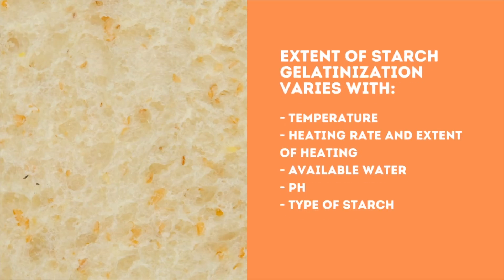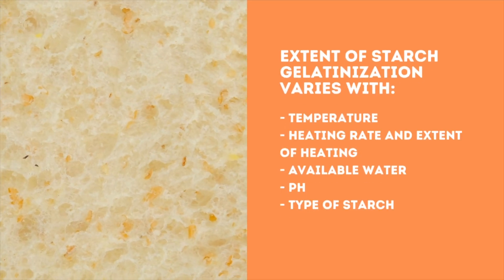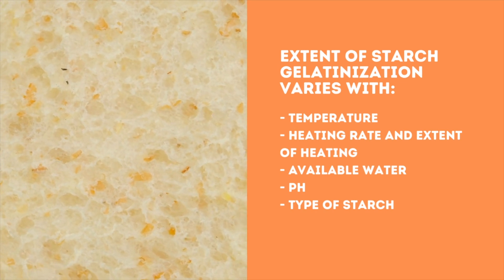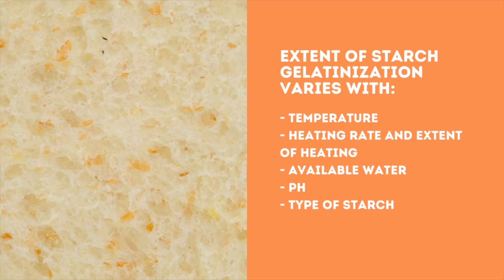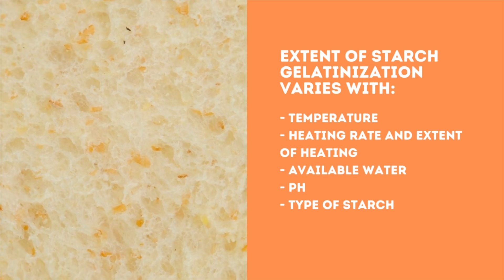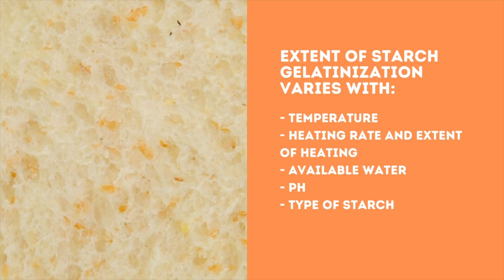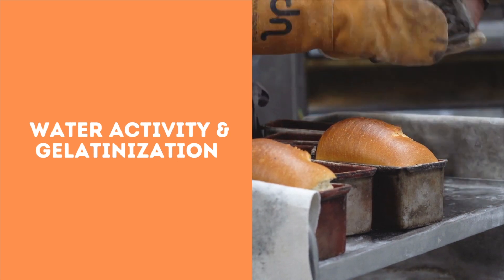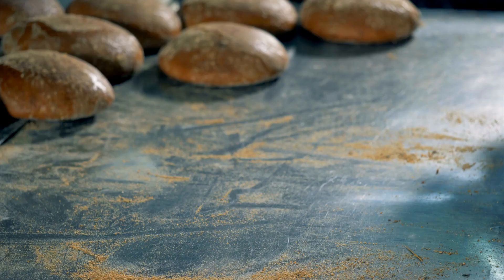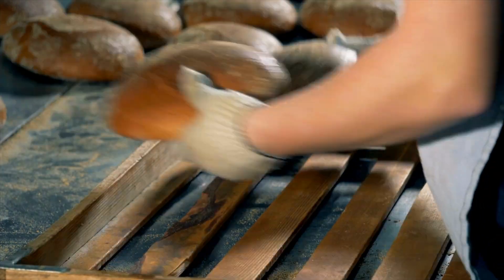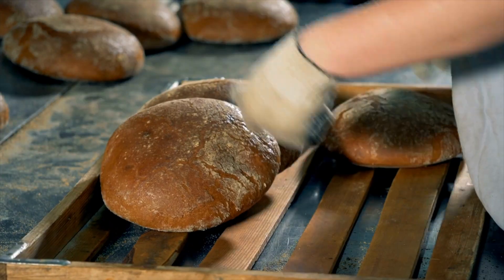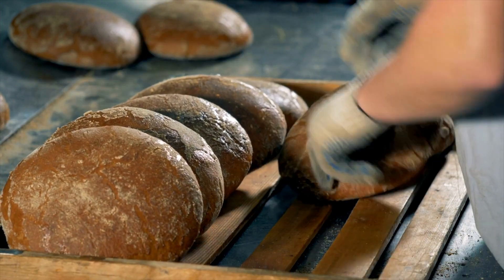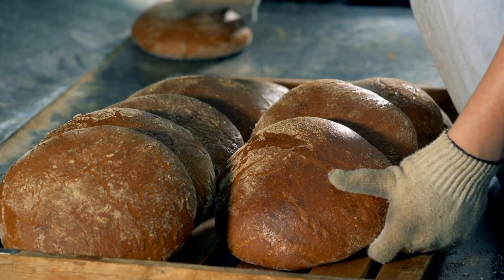The extent of starch gelatinization varies depending on temperature, heating rate, extent of heating, available water, pH, and type of starch. The presence of dissolved solids and low molecular weight compounds such as salts, sugars, amino acids, and alcohols like polyols and glycerol lowers the amount of free or unbound water.